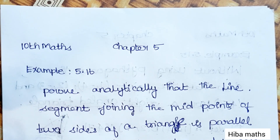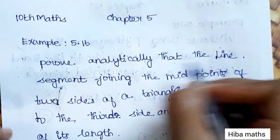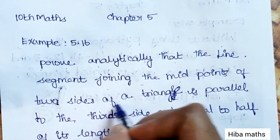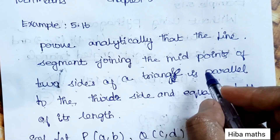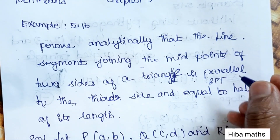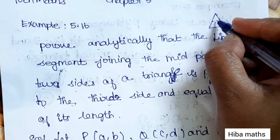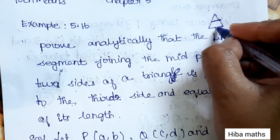Hello students, welcome to Hibamax 10 Standard Max Chapter 5 Example 5.16. Prove analytically that the line segment joining the midpoints of two sides of a triangle is parallel to the third side. This is a triangle with two sides at the midpoints, and the segment joining them is parallel to the third side.